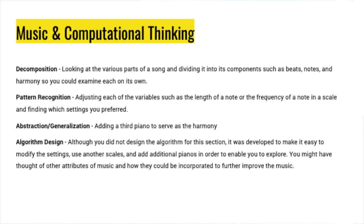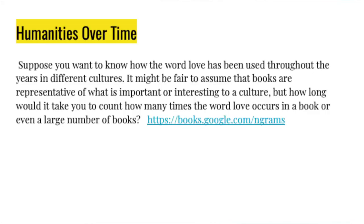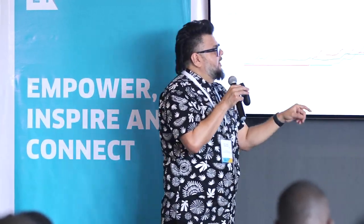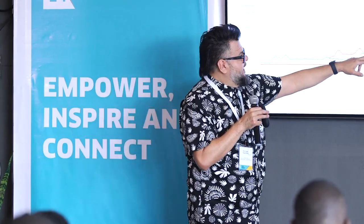We can also look at the humanities. Google has a great tool called the Ngram. About 15 to 18 years ago, Google scanned as many books as they could find and put the words into their natural language processing system, making all those books searchable by year and by word. You can type in search terms — like Albert Einstein, Sherlock Holmes, or Frankenstein — and Google will show how many times that word was mentioned in books from, say, 1800 to 2000.